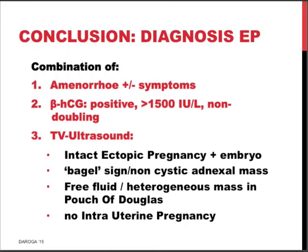In conclusion, the ectopic pregnancy diagnosis is based on a combination of: a positive pregnancy test and amenorrhea with or without symptoms; usually a beta-HCG that is not multiplying by at least 66% in 48 hours; and on transvaginal ultrasound, sometimes visualization of the intact ectopic pregnancy with an embryo, more often the bagel sign as a non-cystic adnexal mass, associated free fluid or heterogeneous mass in the pouch of Douglas, or an empty uterus with no intrauterine pregnancy. It's a combination of these three elements.